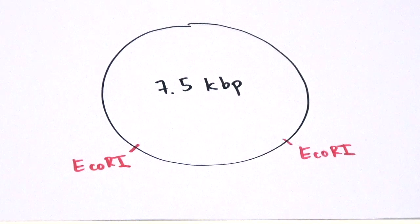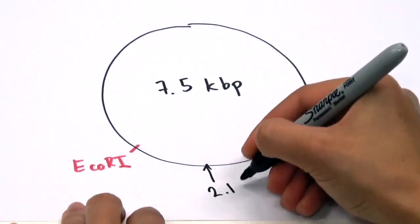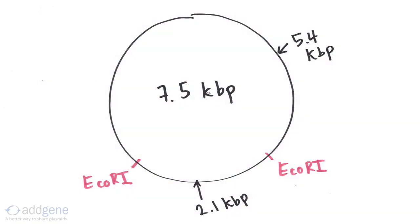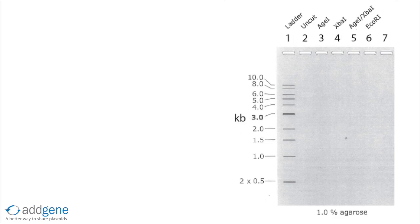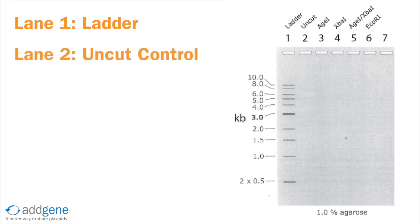We'll also digest the plasmid with EcoRI, which has two recognition sites in the plasmid. So let's draw out the expected results. Here's our gel. Lane 1 is the size marker, often referred to as the ladder. Lane 2 will be the undigested control. Because this plasmid is circular, the migration pattern of the undigested control diverges a bit from the migration pattern of the ladder, which was made with linear DNA.